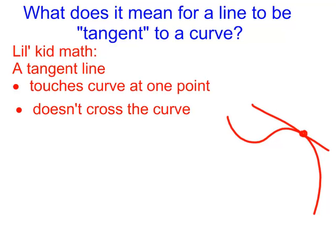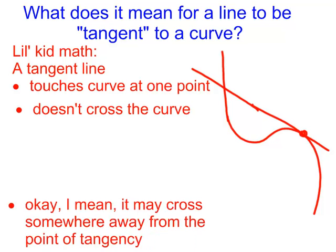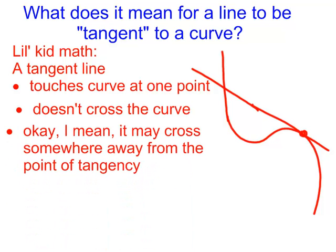But if our definition says that the tangent line only touches the curve at one point, I then ask the question, well, let's say that the curve continues and the tangent line continues. Is it not touching at more than one point now? It crosses somewhere, maybe far away from the point of tangency, but we're just talking about in the neighborhood of the point of tangency.